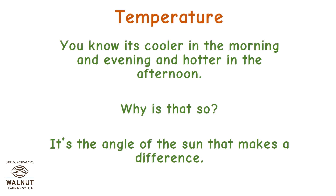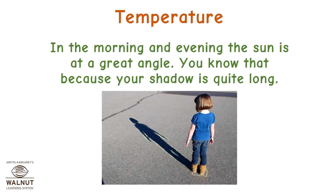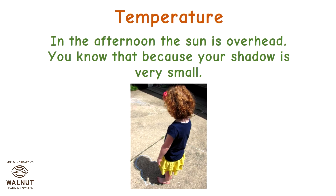You know it's cooler in the morning and evening and hotter in the afternoon. Why is that so? It's the angle of the sun that makes a difference. In the morning and evening, the sun is at a great angle — you know that because your shadow is quite long. In the afternoon, the sun is overhead, and you know that because your shadow is very small.